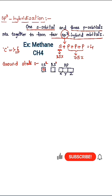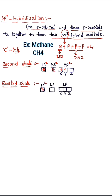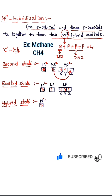In carbon's ground state: 1s has two electrons, 2s has two electrons, and 2p has one electron in the x orbital and one electron in the y orbital. In the excited state, one electron from 2s jumps into the z orbital of 2p. The 1s orbital is already complete with two electrons.